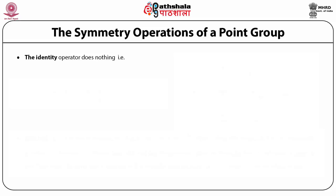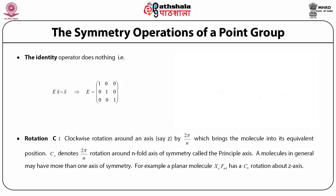Let us discuss the symmetry operations of a point group. Number one: the identity operator. By its very definition, the identity operator does nothing to the vector; X is transformed into itself by the identity operator E. The identity operator E can be represented by the diagonal 3x3 matrix with ones on the diagonal. The second symmetry operation is rotation C, defined as a clockwise rotation around an axis — say the Z axis — by an amount equal to 2π/n, which brings the molecule back to its equivalent position. Cn denotes 2π/n rotations around an n-fold axis of symmetry.